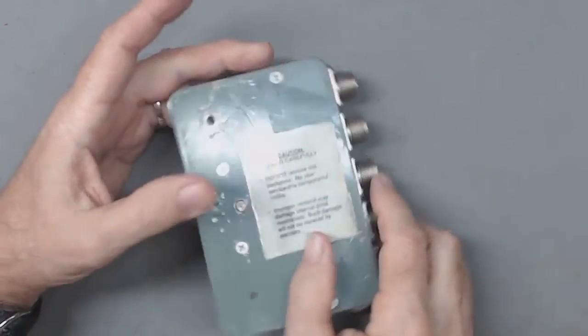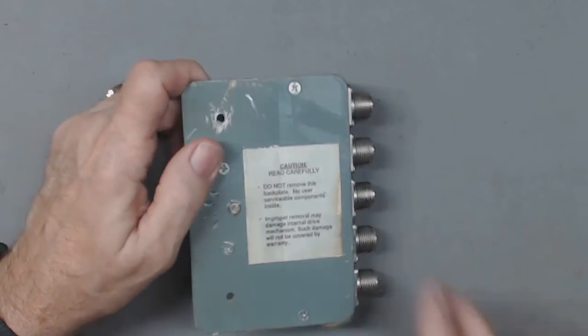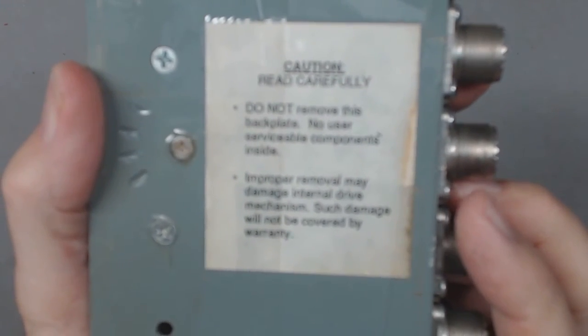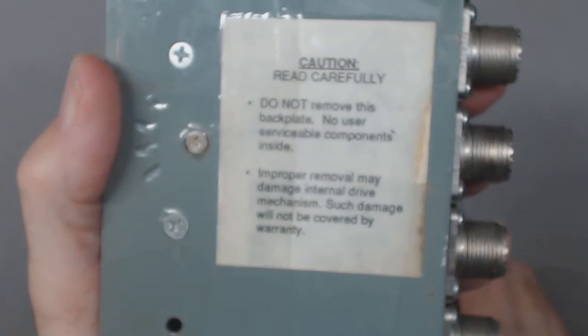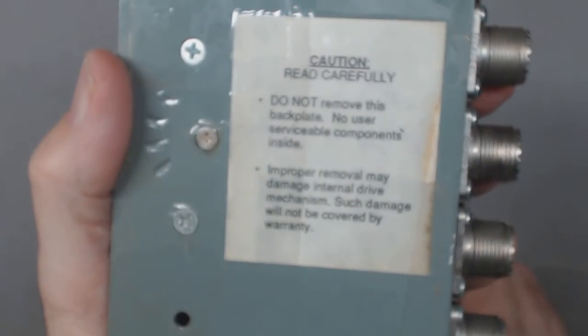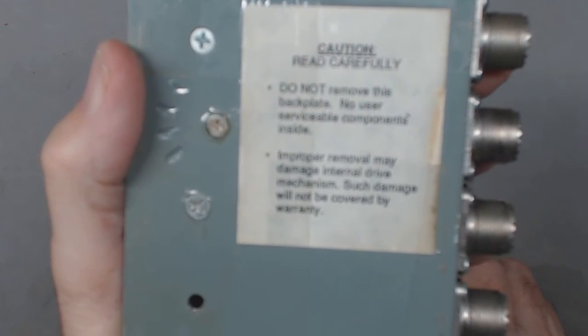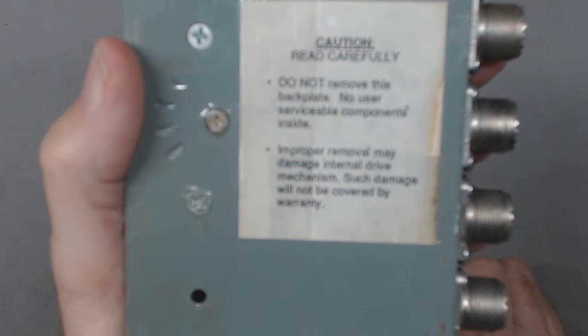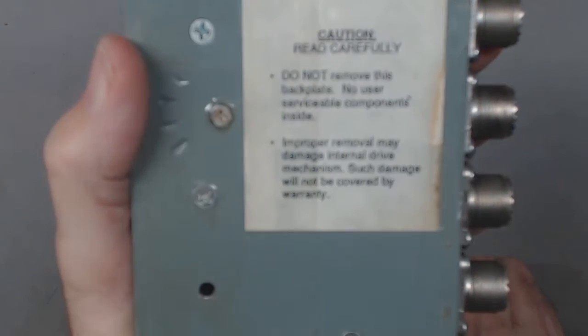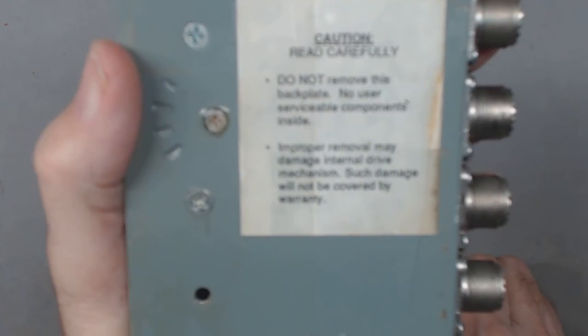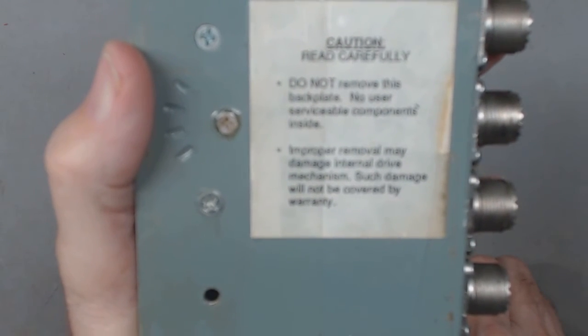On the back of this there's a little plaque that was taped on that says 'Caution, read carefully. Do not remove the backplate. No user serviceable components inside.' It says improper removal may damage the internal drive mechanization. Such damage will not be covered by the warranty.